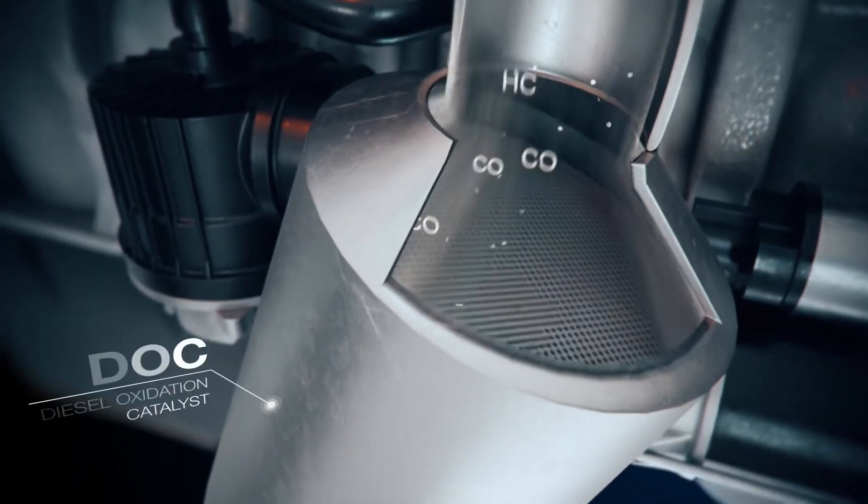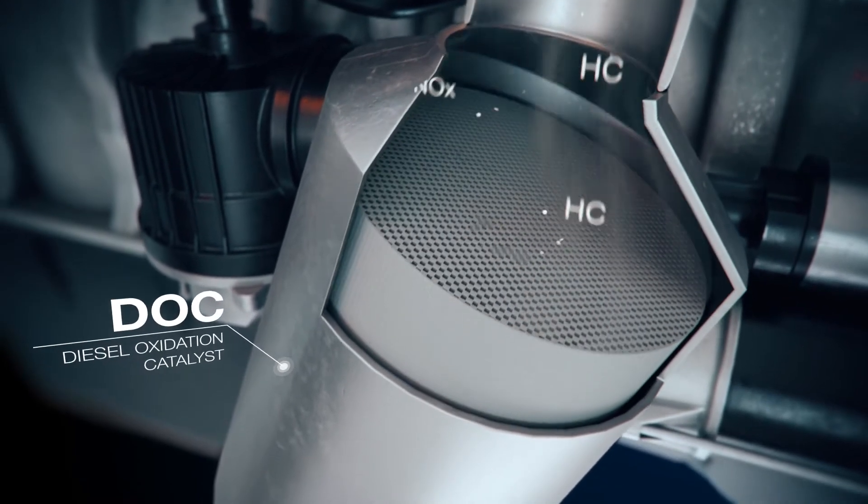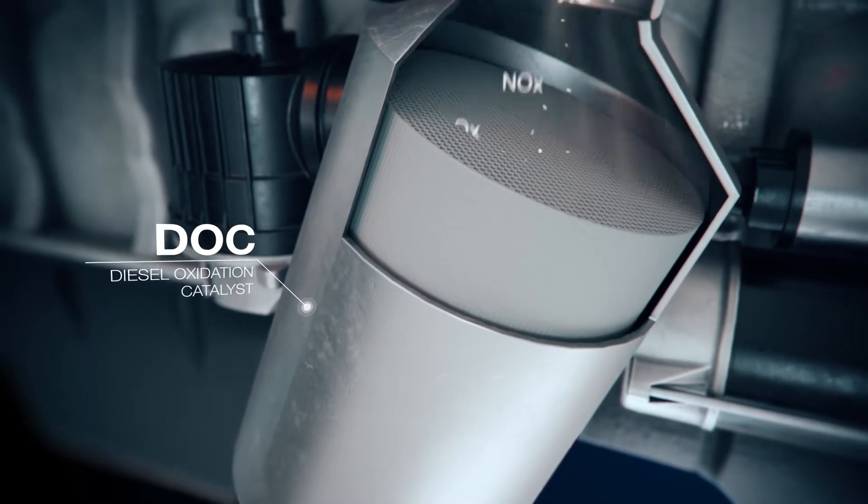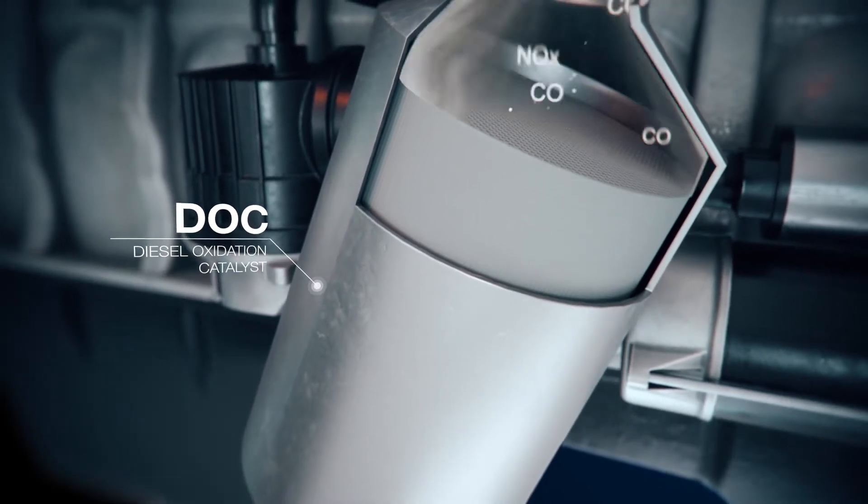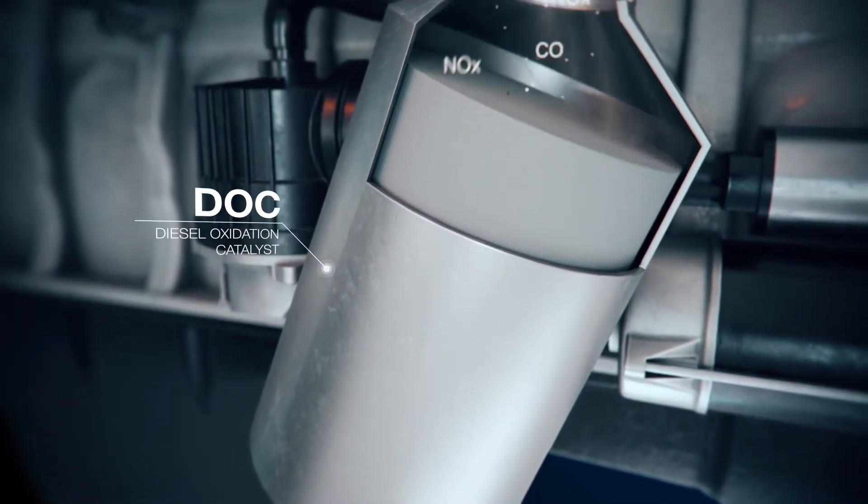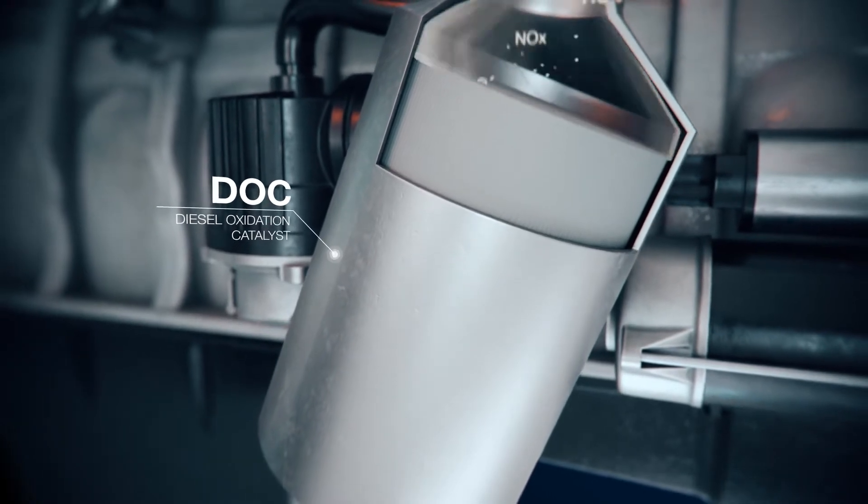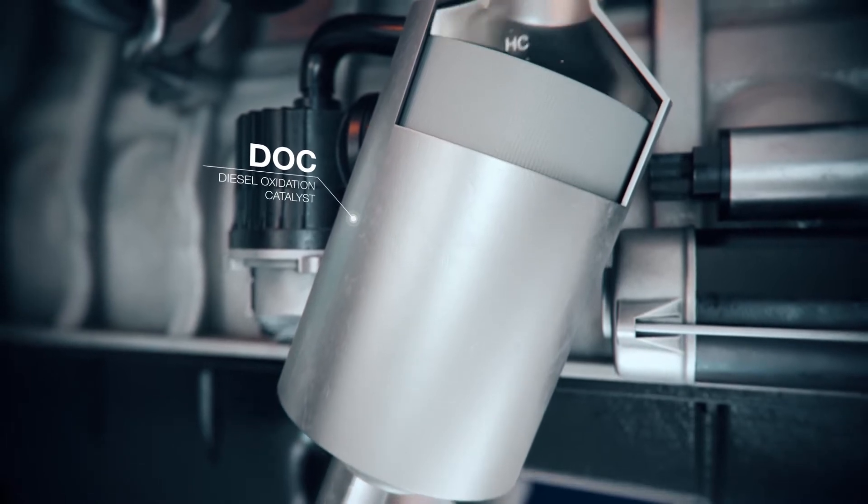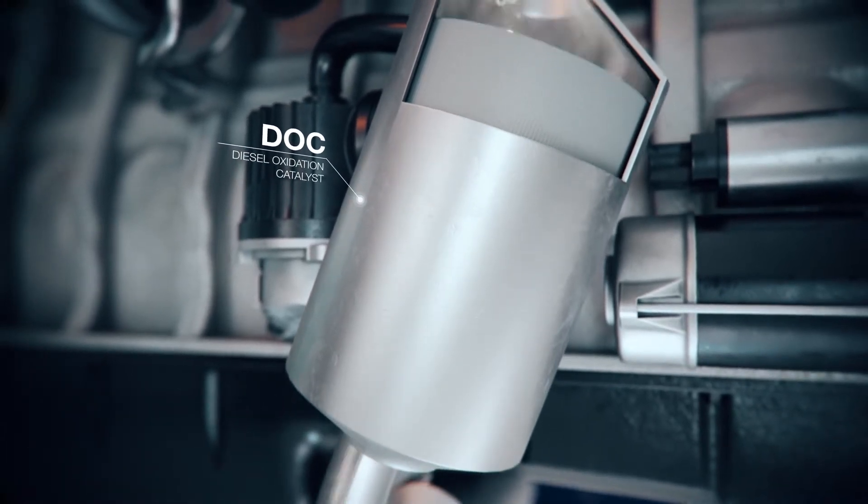Here we see a diesel oxidation catalyst. It is used to control and reduce hydrocarbons and carbon monoxide coming out from the exhaust. As the hot diesel exhaust flows through the diesel oxidation catalyst, a chemical reaction converts these pollutants into less harmful components.